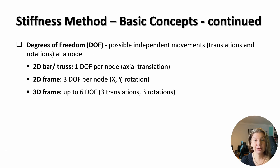At each node, we need to define the possible ways it can move, and these are called degrees of freedom, or DOFs. These are the unknowns that we solve for in the stiffness method. The number and type of degrees of freedom at a node depend on the type of structure and whether the analysis is 1D, 2D, or 3D. In trusses, each node usually has one translational degree of freedom in the axial direction of the member. In 2D structures like beams and frames, each node typically has two translational degrees of freedom — axial and shear — as well as one rotational degree of freedom about the out-of-plane axis. In 3D structures like space frames, each node could have up to three translational and three rotational degrees of freedom.